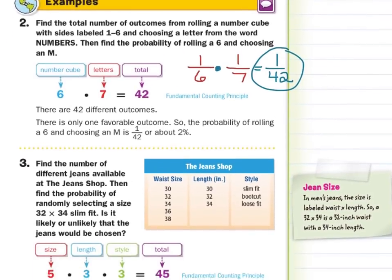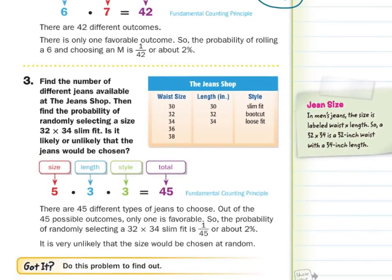In our third guided example, find the number of different jeans available at the jean shop, then find the probability of randomly selecting a size 32 by 34 slim fit. How many different sizes do we have? Five. Lengths? Three. Styles? Three. So five times three times three gets us 45 possible different outcomes — 45 different types of jeans to choose from. Out of the 45 possible outcomes, only one is favorable, so the probability is 1/45, or 2%, which is very unlikely.